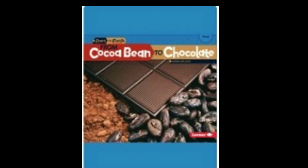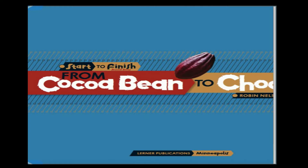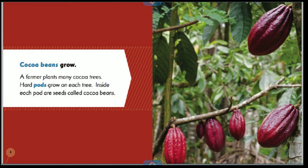From Cocoa Bean to Chocolate by Robin Nelson. Cocoa beans grow — a farmer plants many cocoa trees. Hard pods grow on each tree, and inside each pod are seeds called cocoa beans.